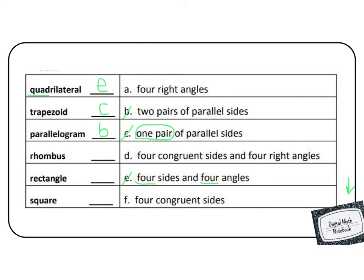Our next shape is a rhombus, and remember a rhombus has to have congruent sides. So for our last, for a rhombus, that would be F, four congruent sides.